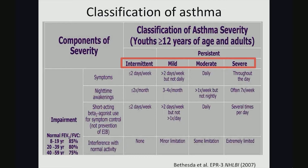In moderate asthma, symptoms typically occur daily, nighttime awakenings happen greater than once a week but not nightly, short-acting beta agonist use for symptom control is required daily, and there is some limitation on normal activity. In severe asthma, symptoms persist throughout the day, nighttime awakenings occur often seven times a week, SABA use is required several times throughout the day, and severe asthma significantly limits patients' normal activity.